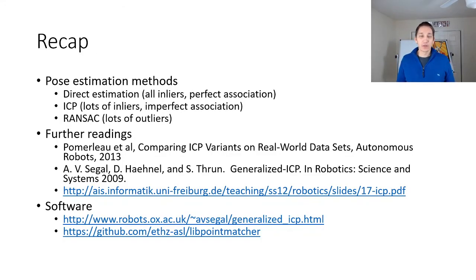So as a recap we looked at three different pose estimation methods. Direct estimation which is useful when you have all inliers and you have perfect associations between the source and the target. ICP in which you have many inliers but some imperfect association and so you want to determine the correspondences dynamically. And then RANSAC in which you have lots of outliers and it's using random sampling to try to generate a set that produces inliers. For further reading about ICP, here's a few more readings and also here's ICP software if you're interested in downloading some of those for your own projects. That's it for today. I'll see you next time.